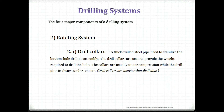Drill collars are thick-walled steel pipe used to stabilize the bottom-hole drilling assembly. They are used to provide the weight required to drill the hole. The drill collars are usually under compression while the drill pipe is always under tension. Drill collars are heavier than drill pipe.